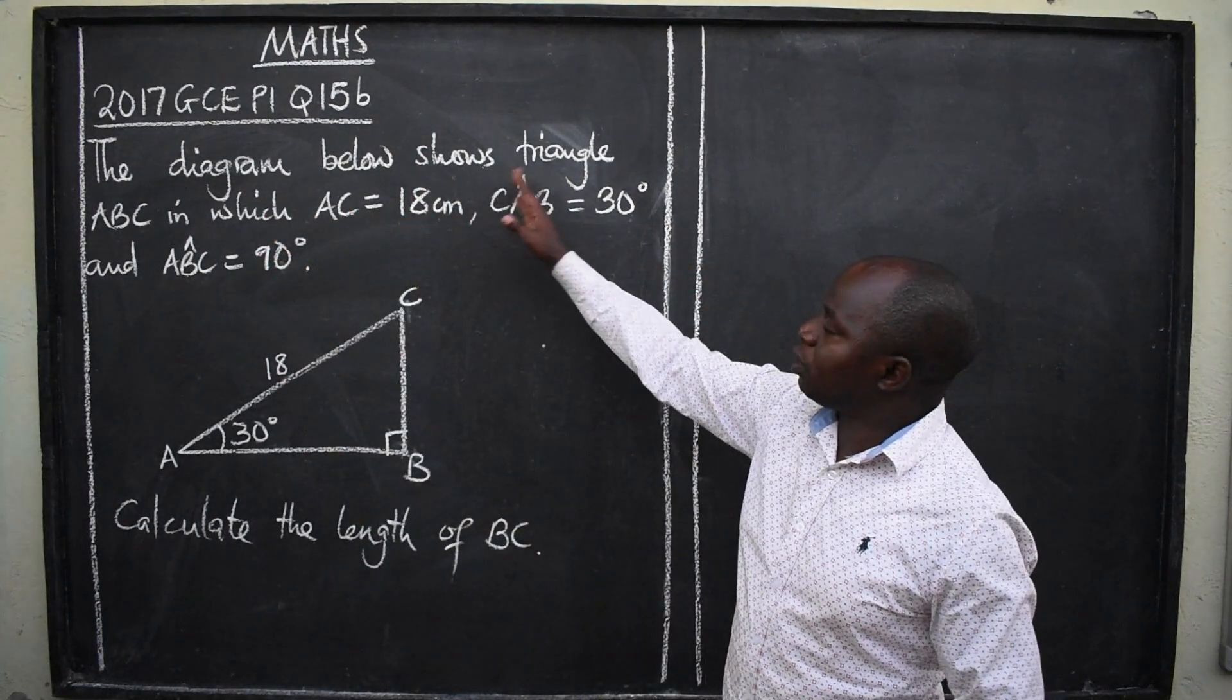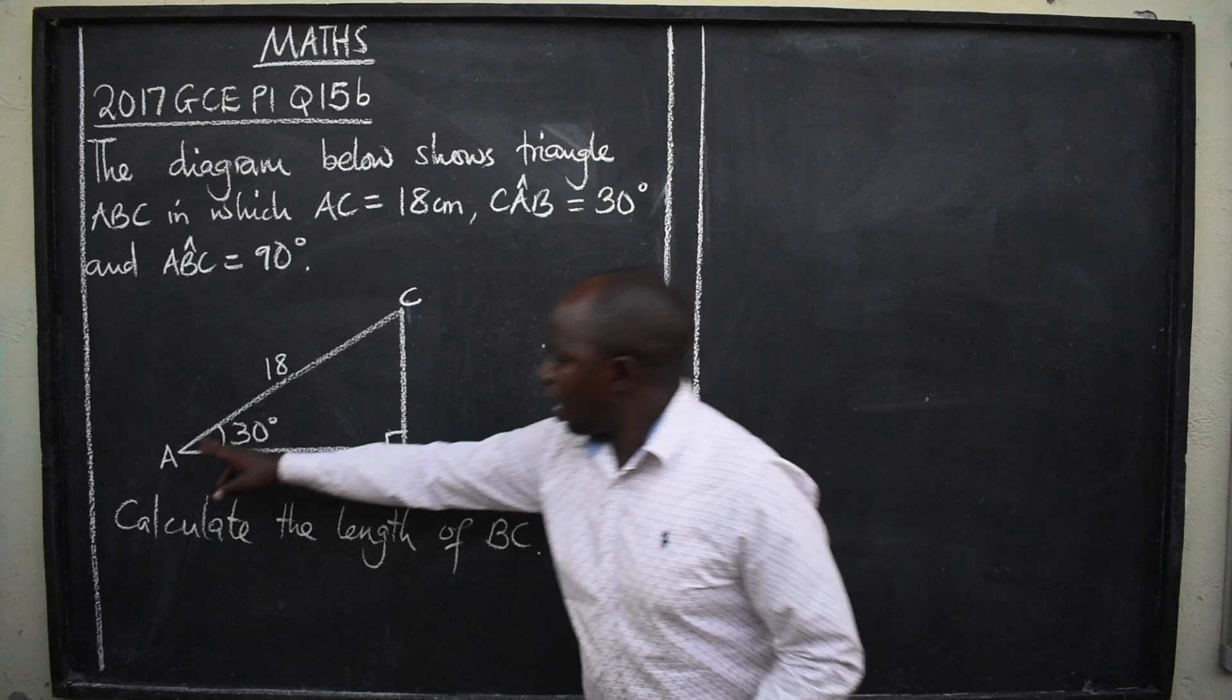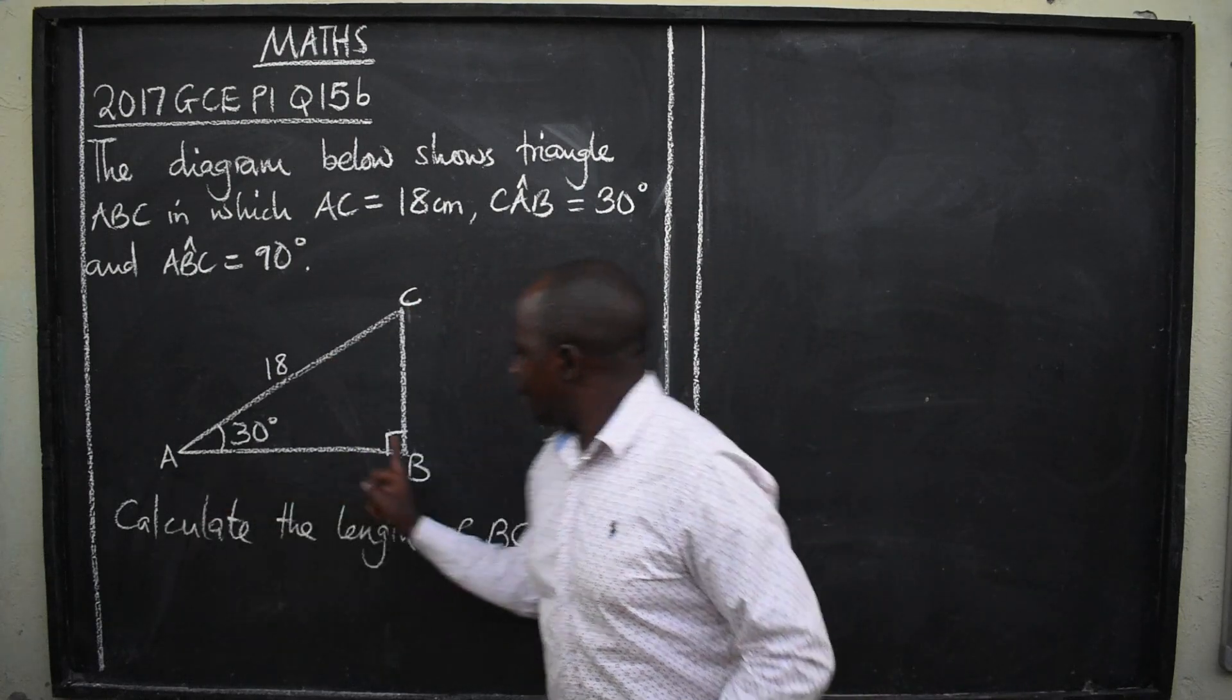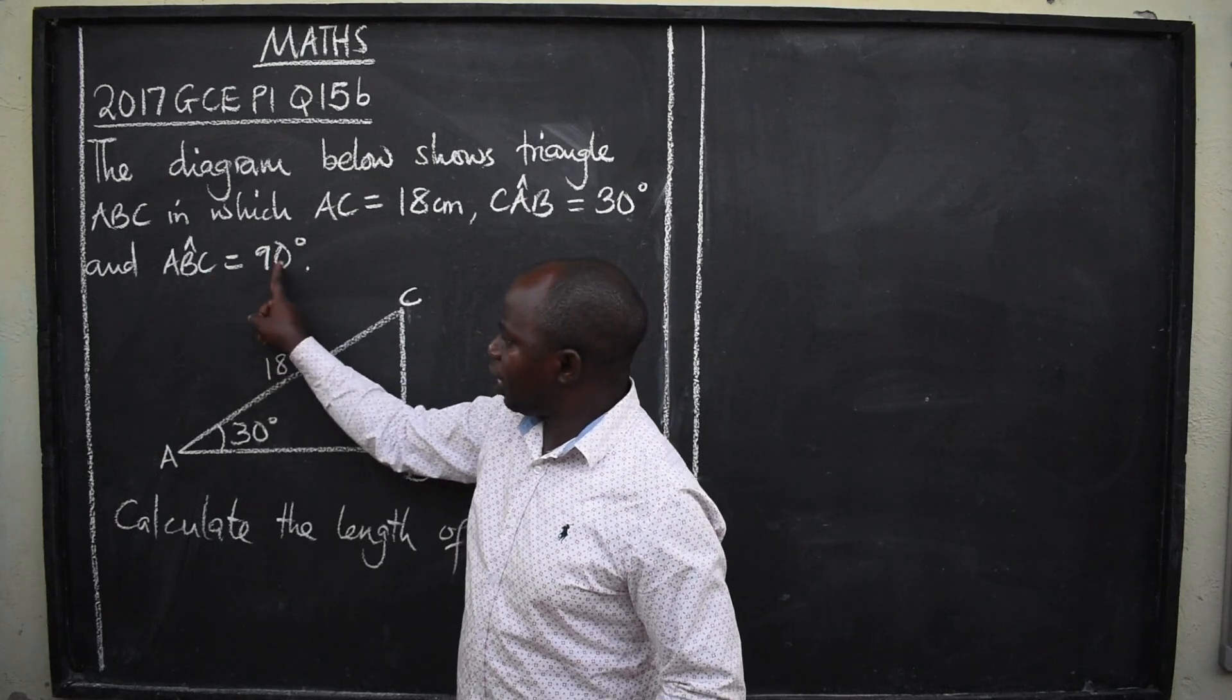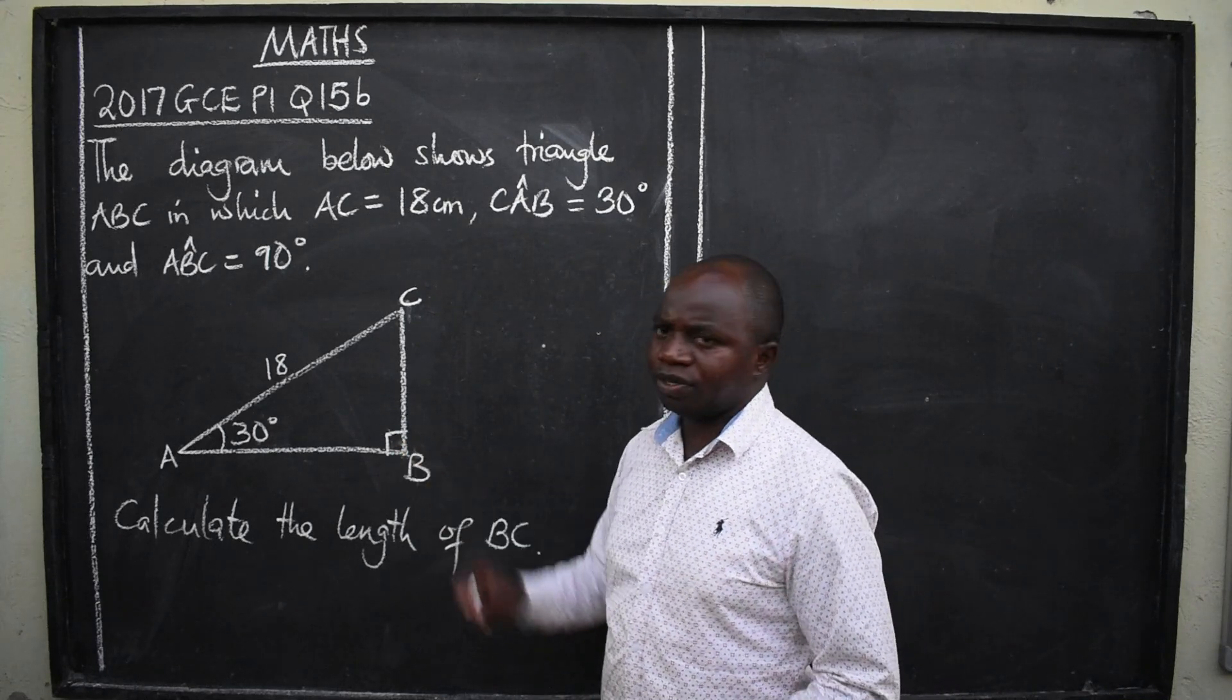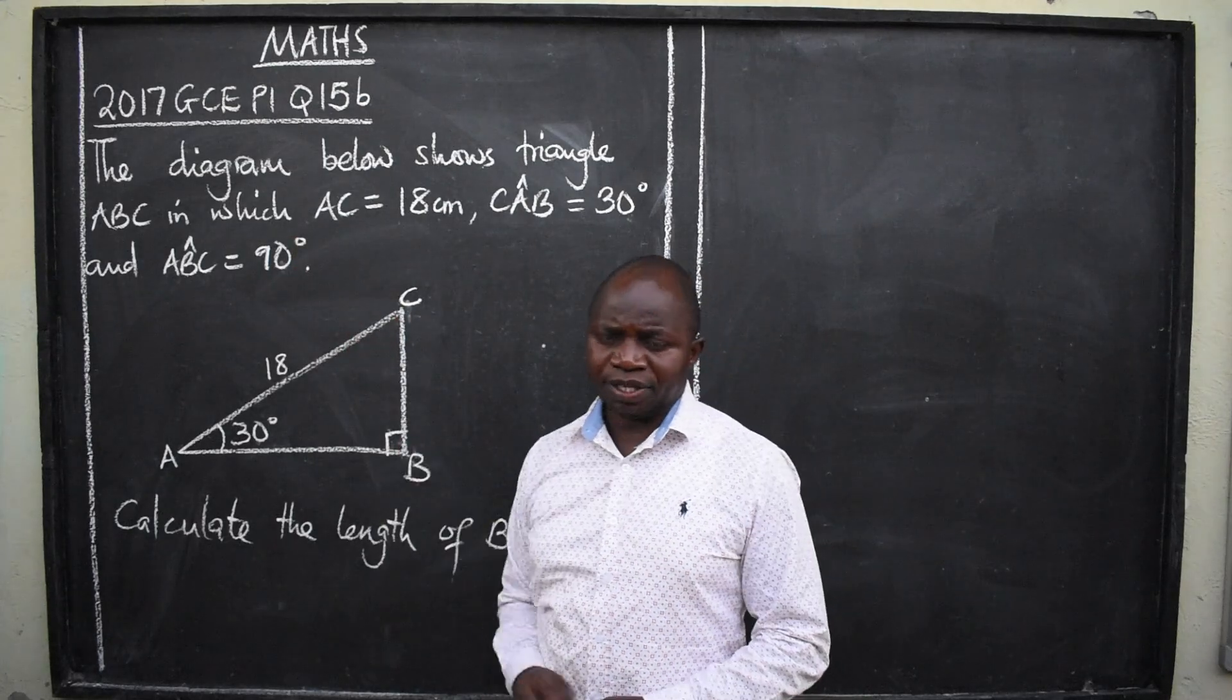The diagram below shows triangle ABC in which AC is equal to 18 centimeters. So we have a triangle here in which A to C is 18 centimeters. Then angle CAB is equal to 30 degrees. So we have 30 degrees here. And angle ABC is equal to 90 degrees. ABC is 90 degrees. So whenever you see this square symbol inside the triangle, any triangle, just know that they are talking about a 90 degrees, which is a right angle.